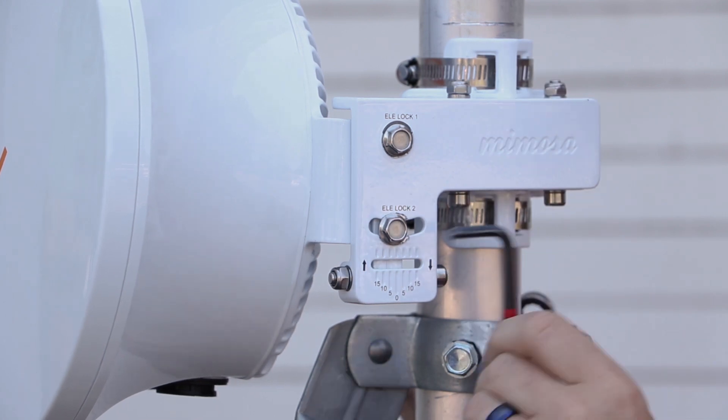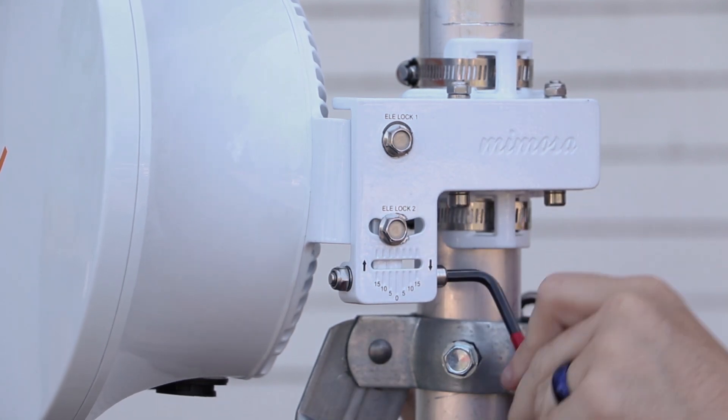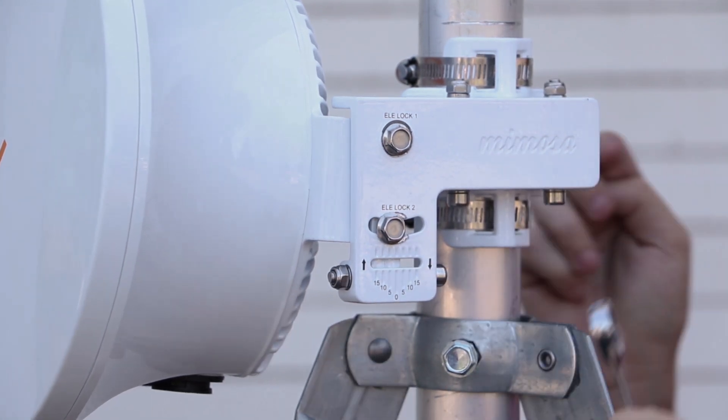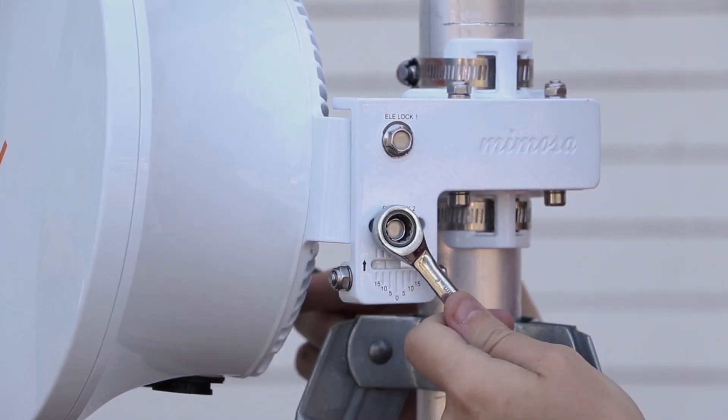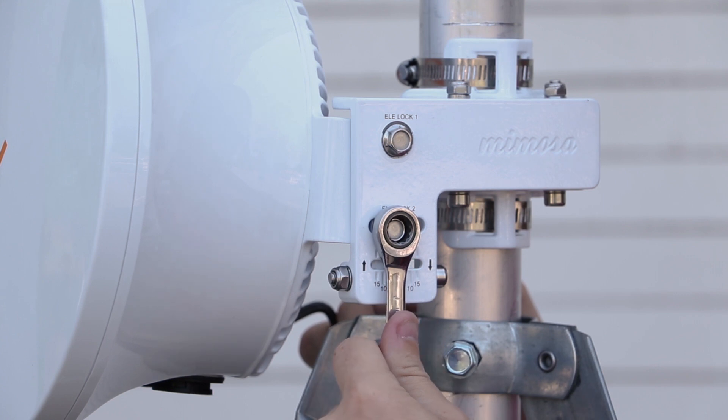You can see the elevation here moving back and forth. And then you just want to kind of slowly tighten LE two up just a little bit.